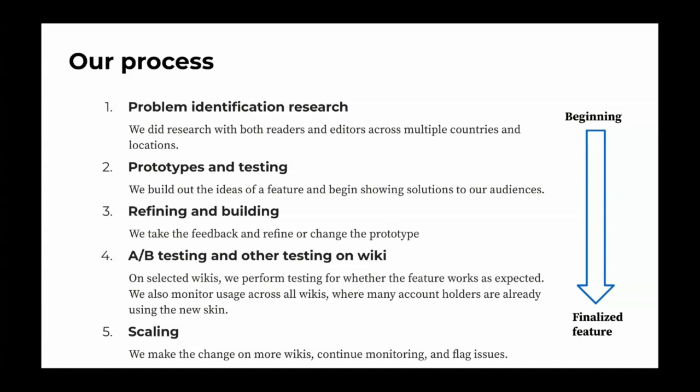Once we do all this research on prototypes, we collect feedback and change the prototype based on what research tells us. Then we go to the building stage where developers build what we've settled on, while we continue conversations with readers and communities. Once the feature is built and ready, we go into quantitative testing — most frequently AB testing — where we ship the feature to about 50% of users on a pilot or partner wiki and compare whether it performs better than the old feature. If it performs better, great. If not, we go back, look at the feedback and data, and fix issues.